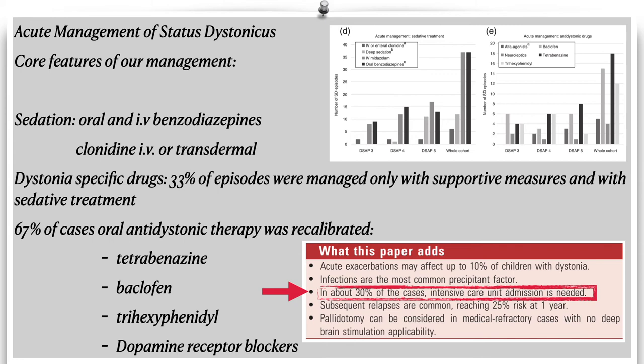Tetrabenazine, baclofen, trihexyphenidyl, or dopamine receptor blockers were added as new drugs or recalibrated if they had been effective before the onset of status dystonicus. Importantly, in about 30% of cases intensive care unit admission was needed for these patients.